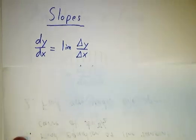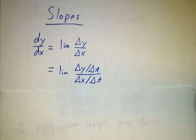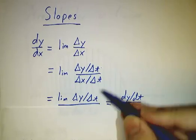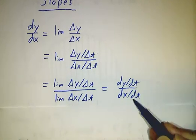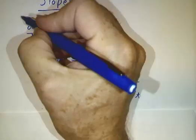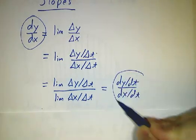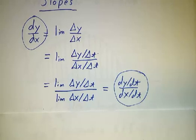And when you're taking a limit, you're allowed to divide the top and the bottom by Δt. And then you take the limit of Δy over Δt divided by the limit of Δx over Δt. And that just gives you dy/dt over dx/dt. So the slope dy/dx is given by dy/dt over dx/dt. And we could also have gotten this result from the chain rule.